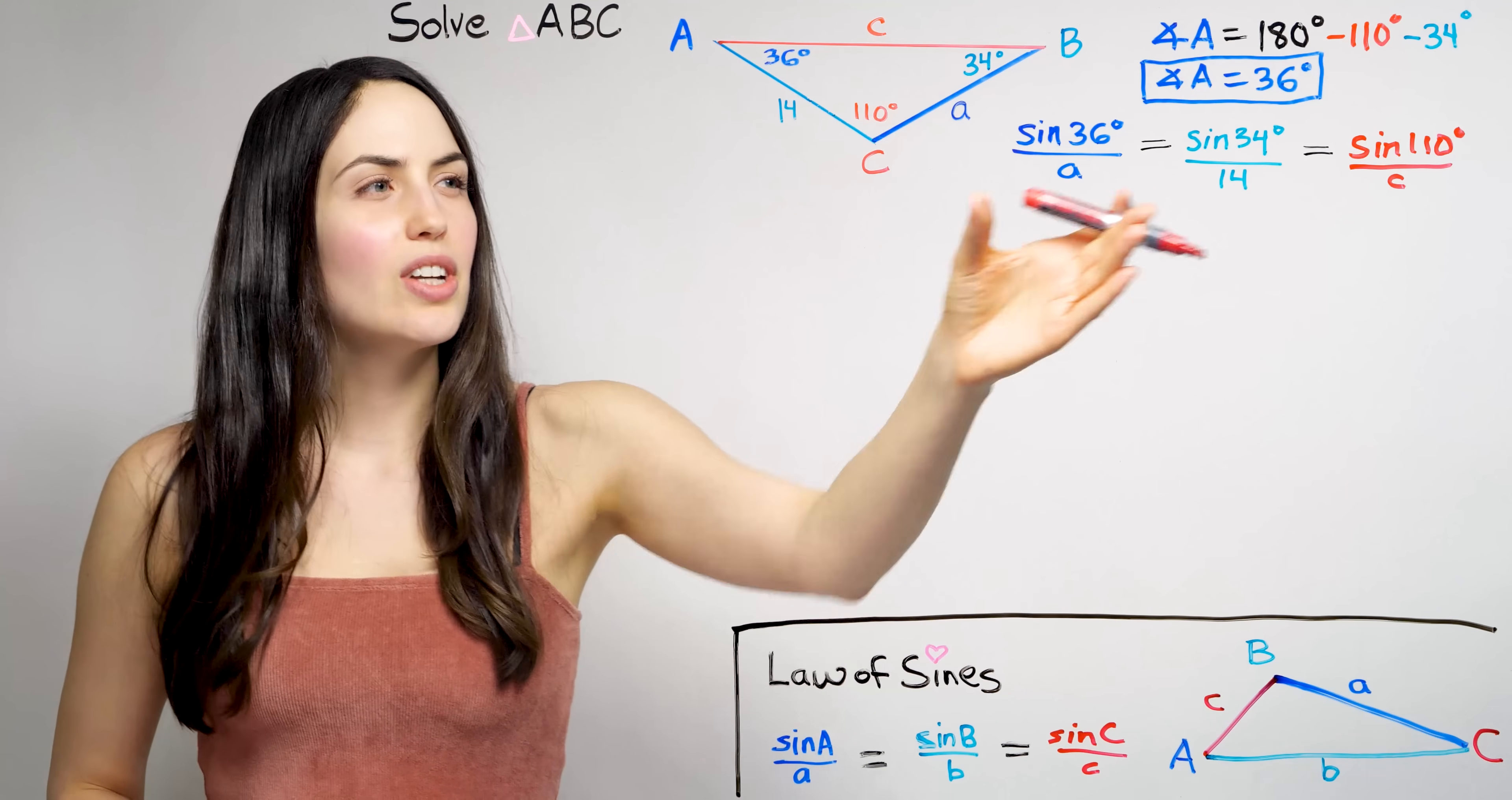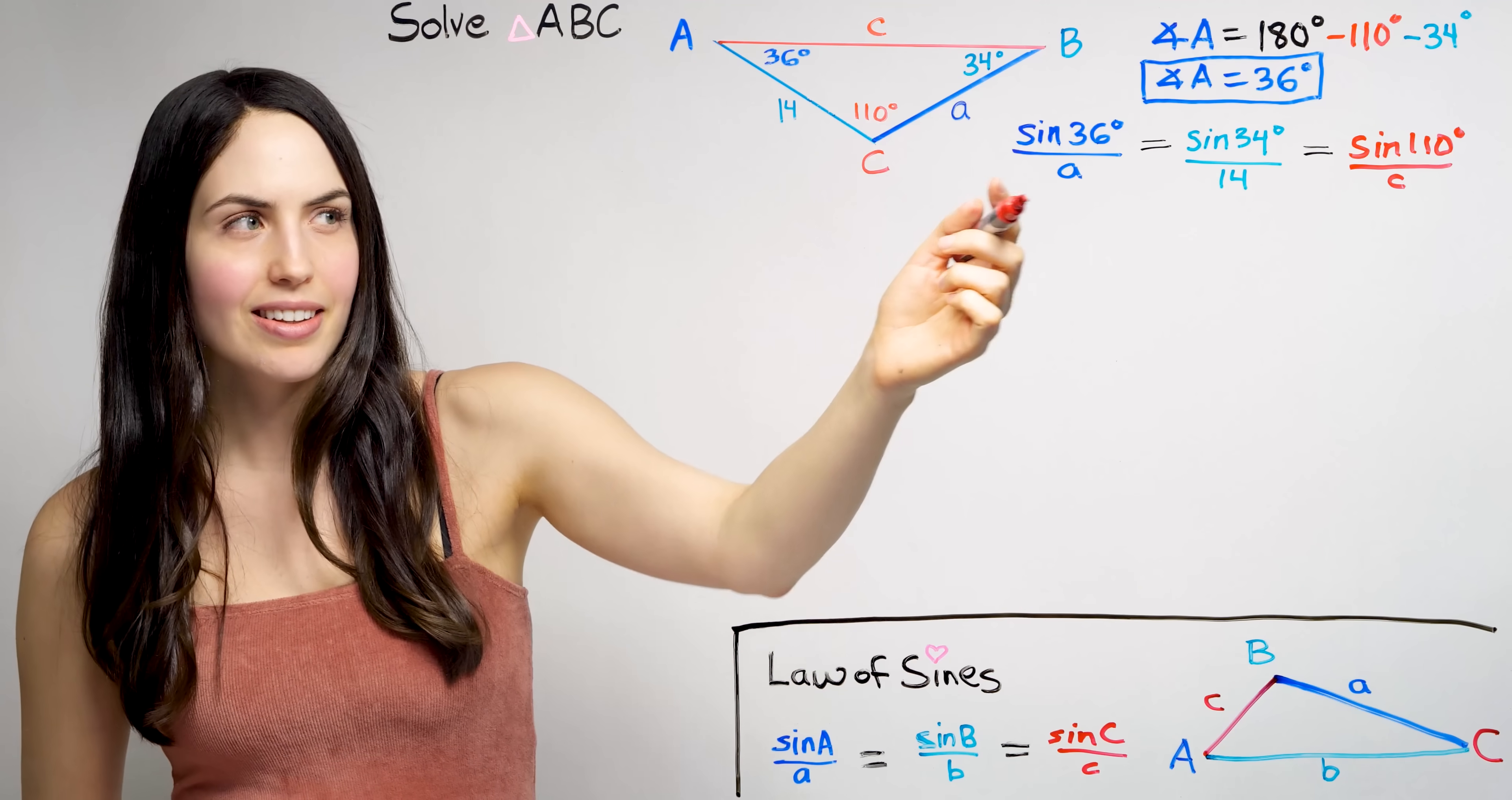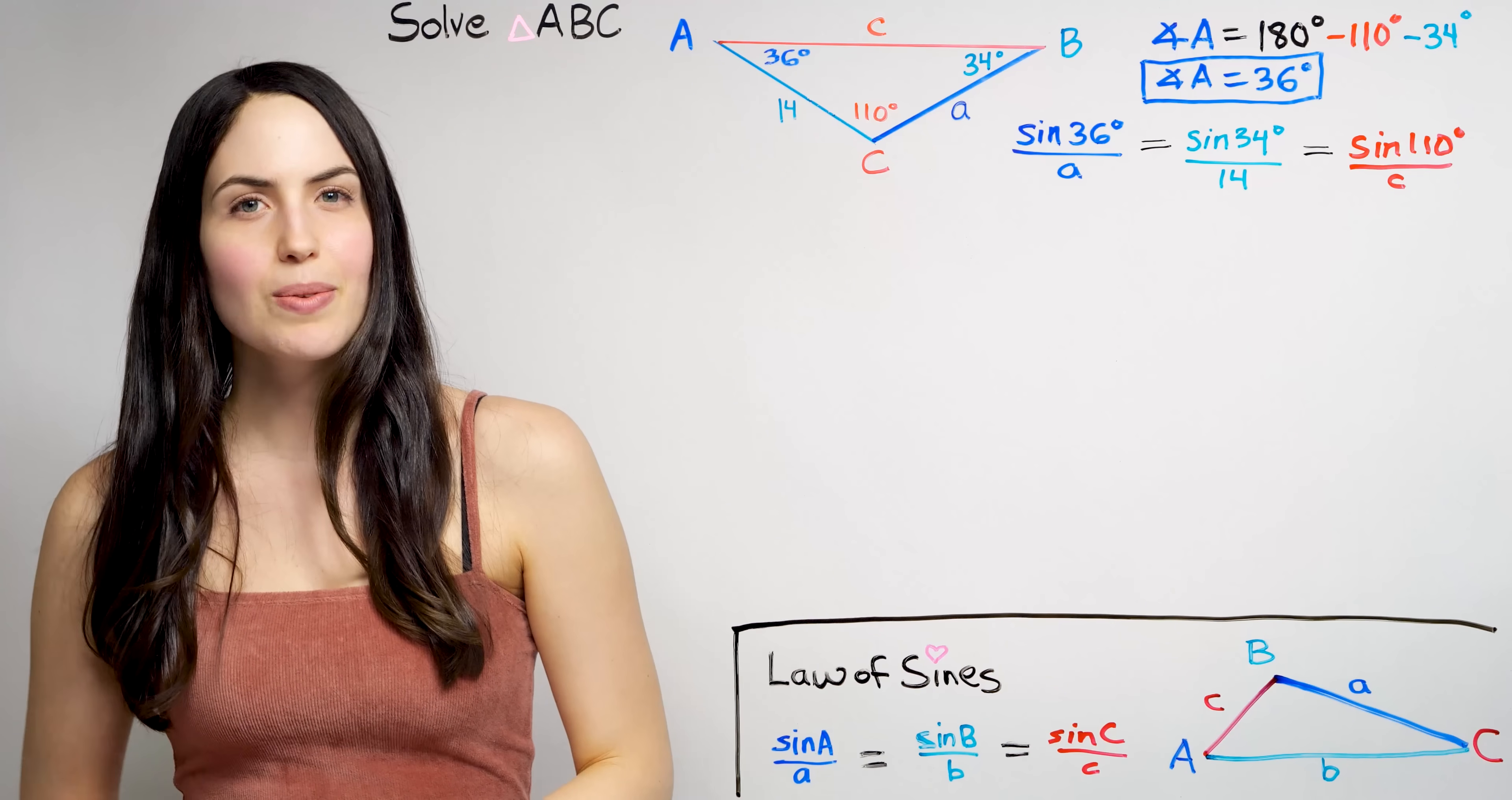And if we look at just this part, just this equation, it looks like we could solve for A. Because if there's only one unknown, only one variable, it means we can solve.